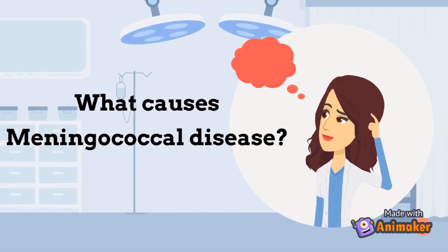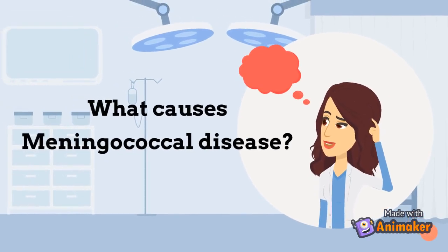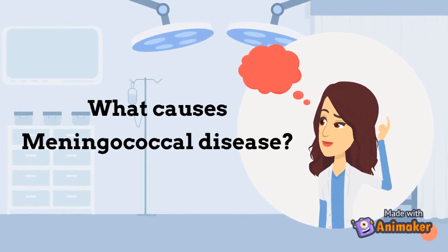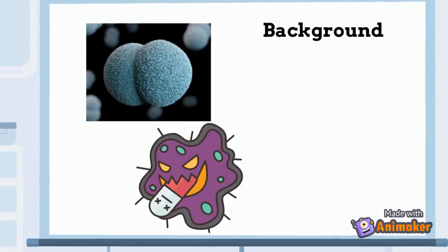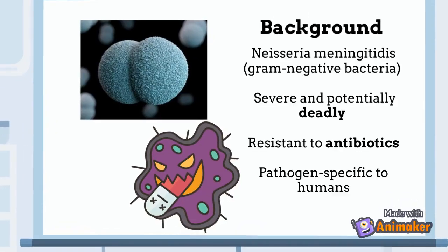But what exactly causes meningococcal disease? Well, meningococcal disease is caused by the bacterium Neisseria meningitidis, which is a gram-negative bacteria, meaning that it does not retain crystal violet staining that is used in a gram-staining method for bacterial differentiation. The disease is severe and potentially deadly. Neisseria meningitidis is resistant to antibiotics, and additionally, the pathogen is specific to humans.